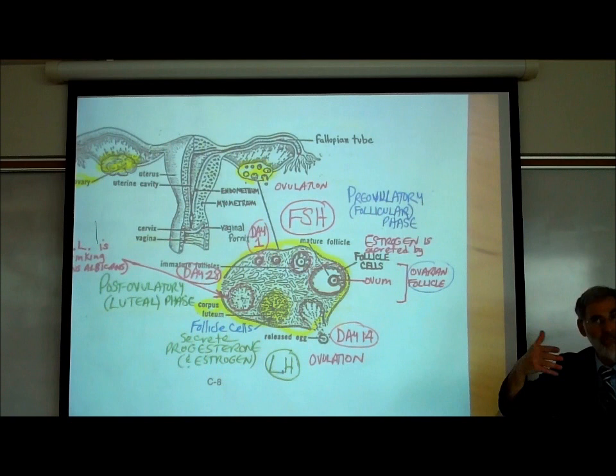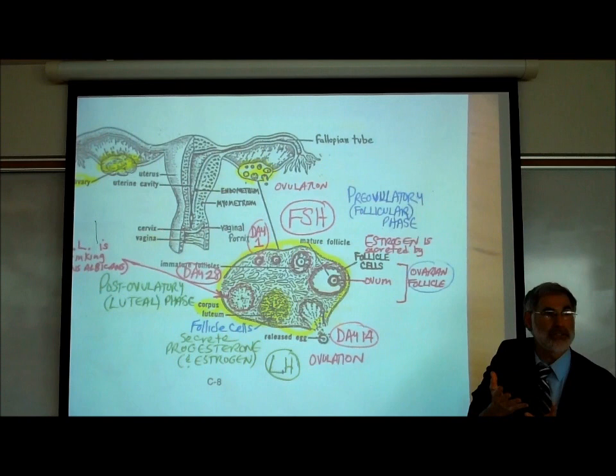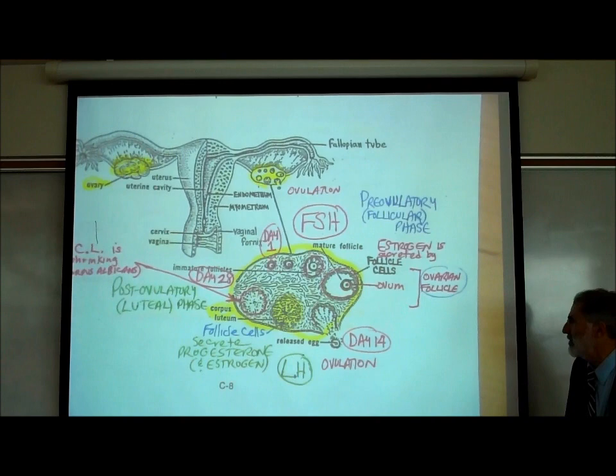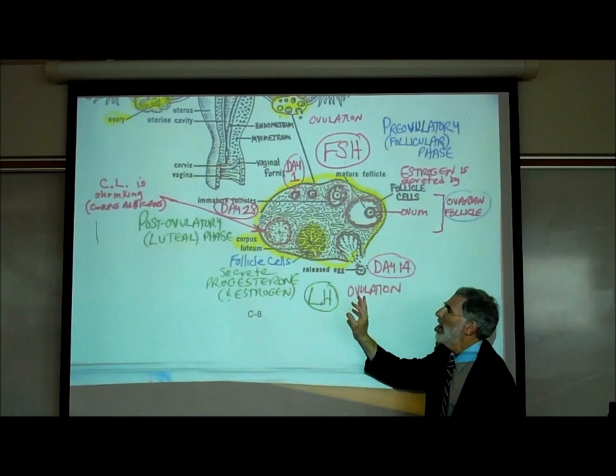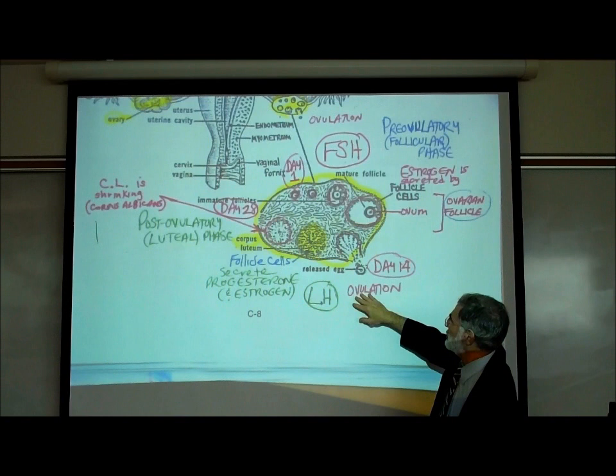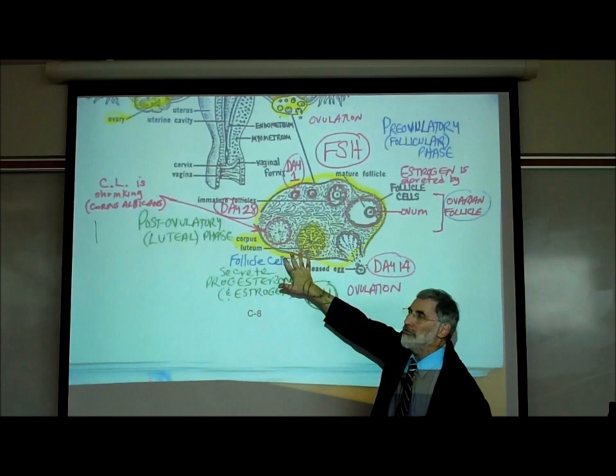This is what happens during the first two weeks of the cycle. Beginning on day 14, a different hormone from the pituitary gland is released — LH. LH, released from the pituitary, is what causes ovulation. On page C11: LH stands for Luteinizing Hormone, and it also comes from the adenohypophysis, or anterior lobe of the pituitary — the same place FSH came from, but a different hormone.